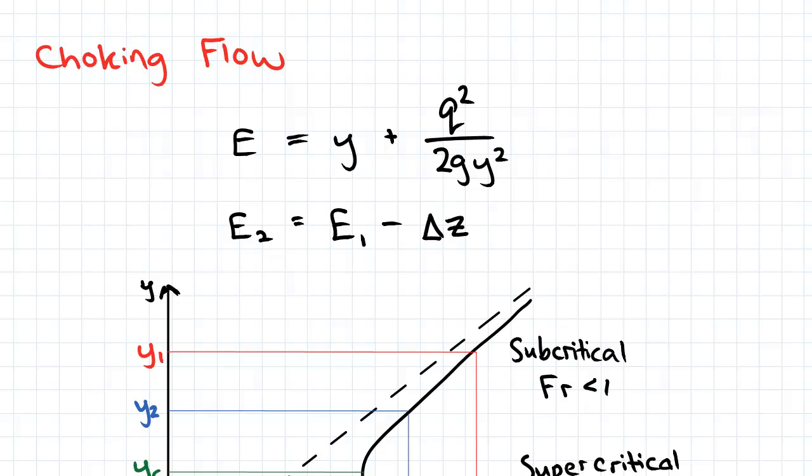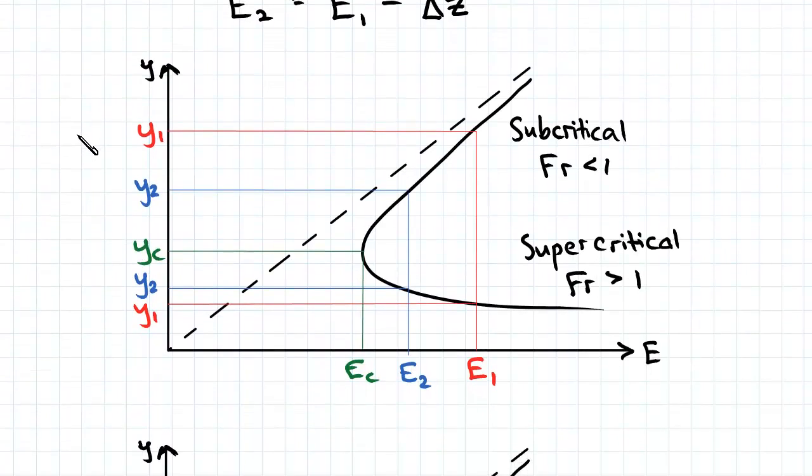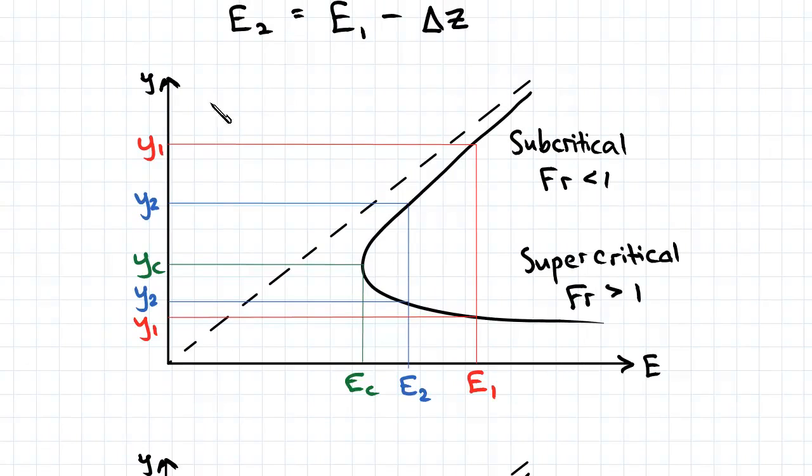Now we're going to consider what happens when e2 is less than eC. In the case where e2 is less than eC, this was the specific energy curve from the previous video. And you can see that eT was greater than eC.